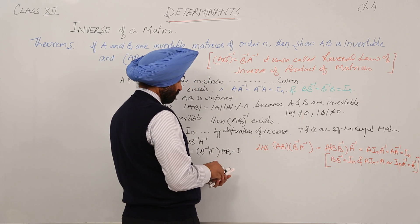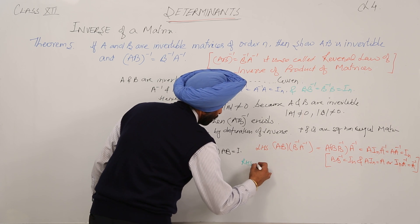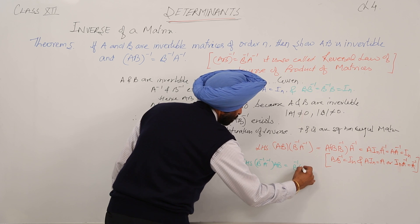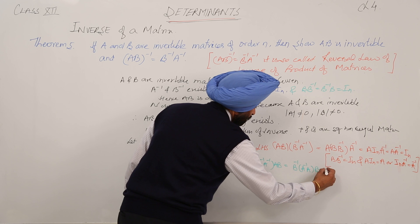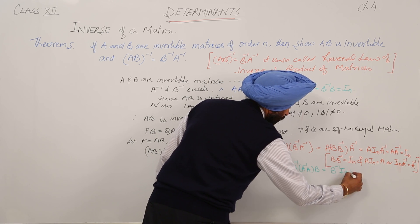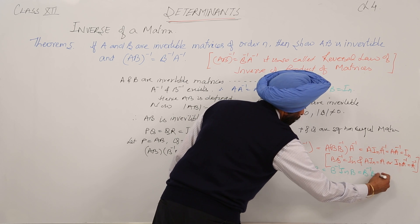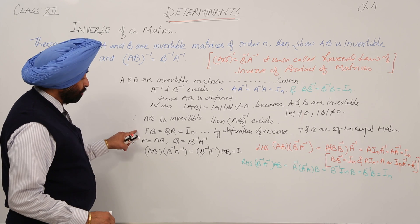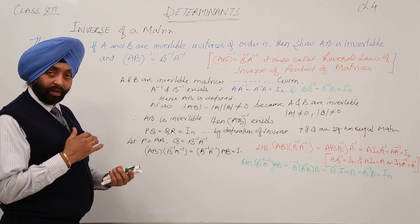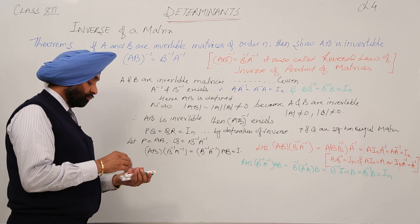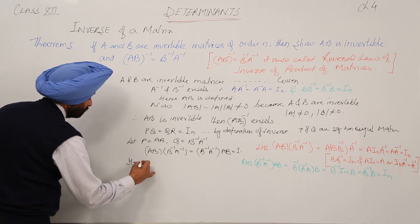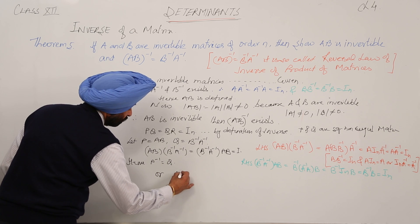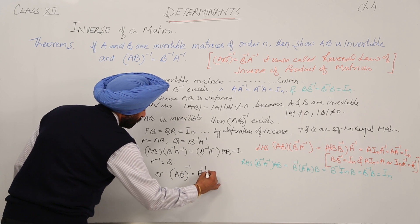Right-hand side: B inverse A inverse with AB equals B inverse A inverse A with B, which equals B inverse I_N with B, and this equals B inverse B, which again equals I_N. So from this, PQ equals QP equals I_N, meaning P is the inverse of Q. Hence, AB inverse equals B inverse A inverse.